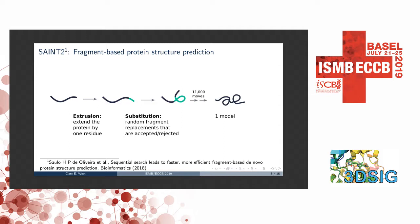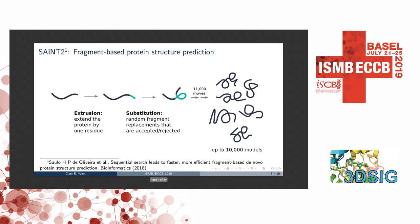The protein structure prediction method we use in our group is called SAINT2. It's a fragment-based protein structure prediction method, which means it's piecing together the target from small fragments of known protein structures derived from the PDB, and it does this using a Monte Carlo algorithm. Unlike other methods, our method is sequential, proceeding from the N to the C terminus, inspired by co-translational folding that occurs in cells. Fragment-based assembly methods produce many models — not just one — and optimally for SAINT2 we'll generate up to 10,000.